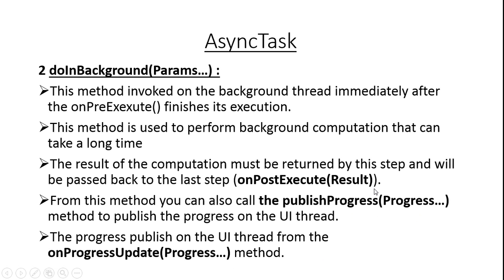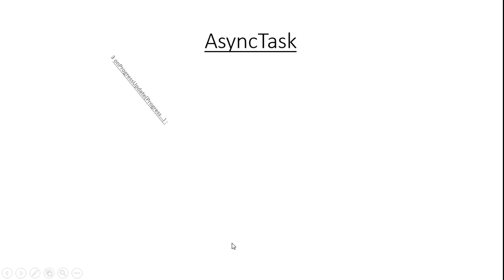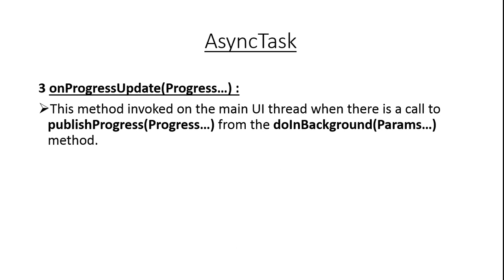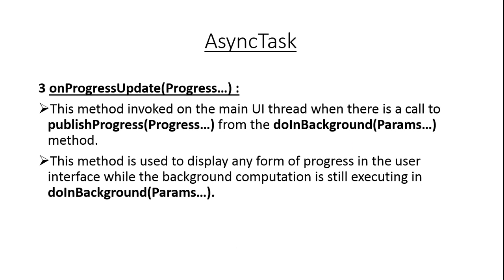Whenever you call the publishProgress method, the Android system calls another method within AsyncTask called onProgressUpdate, and from this method you can publish the result on the UI thread. Here is the third method: onProgressUpdate. This method is invoked on the main thread when there is a call to publishProgress from the doInBackground method. For example, you can display the downloading progress using a progress bar while the download is still running within doInBackground.